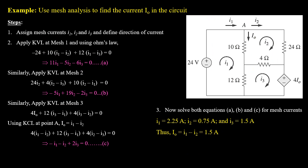In the next example, we need to find current I0 using mesh analysis. The circuit has three meshes with two voltage sources: one independent voltage source and one dependent voltage source whose voltage depends on current I0. Since we have three meshes, we assign mesh currents small i1, i2, and i3 to each mesh as the first step, and define their direction — either clockwise or anti-clockwise. As the second step, we apply KVL to each mesh and use Ohm's law to express voltages in terms of mesh currents.